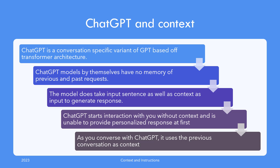Having no context means ChatGPT would try to come up with a default prioritization to respond. However, if it has context available — for example, you told it earlier that you live in New York — and then later ask what the weather is like in your city, ChatGPT would be able to use that prior knowledge to respond with weather info for New York.